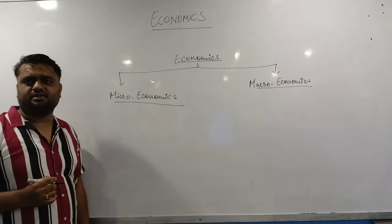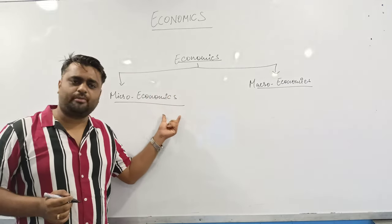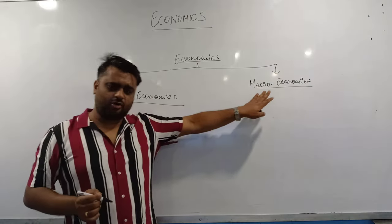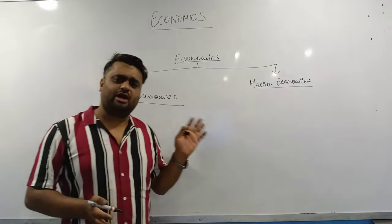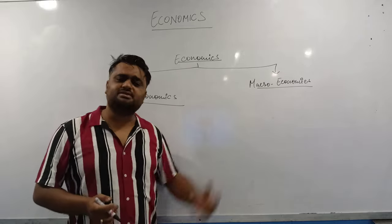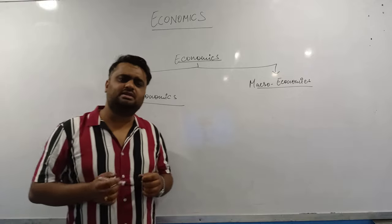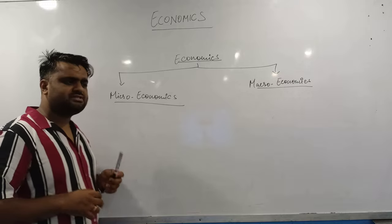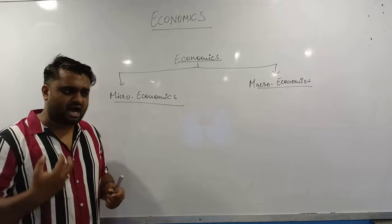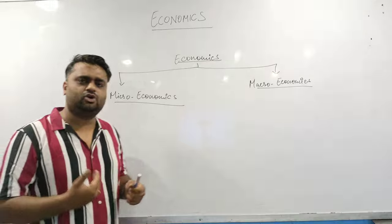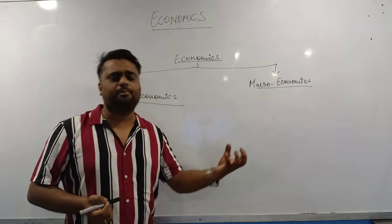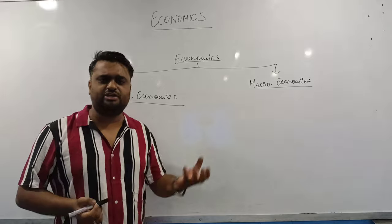There are two major pillars of economics: the first one is microeconomics, and the second one is macroeconomics. Macroeconomics is a very old concept, while microeconomics is a very new concept as compared to macroeconomics. Macroeconomics is a classical theory, but microeconomics has evolved a lot in the past 70-80 years. Today, as the economy and business are growing, people are more focused on calculations and on individual customers and consumers.